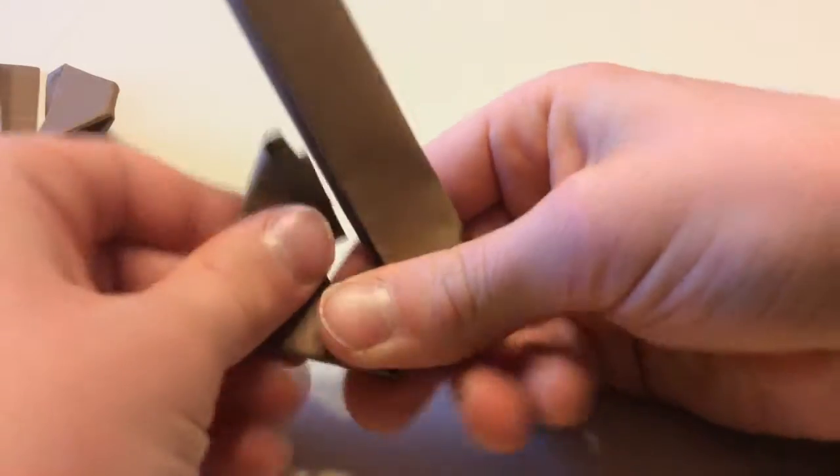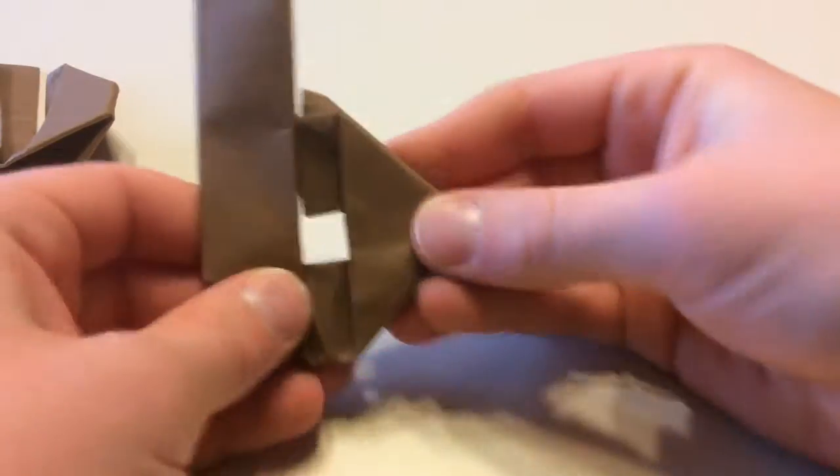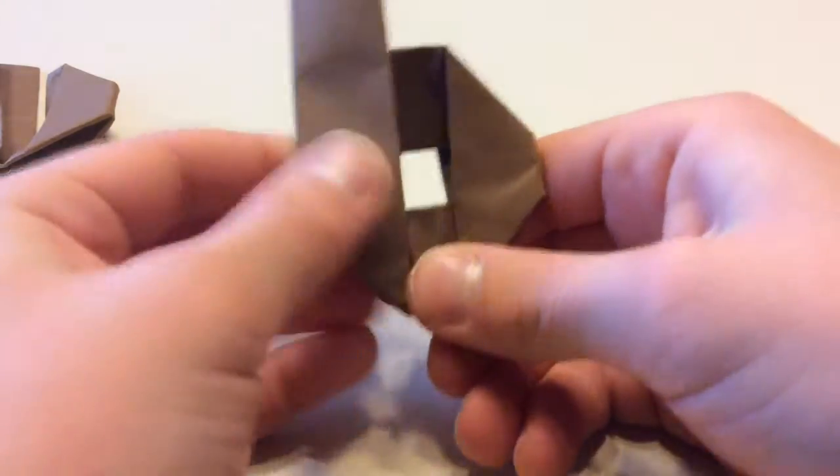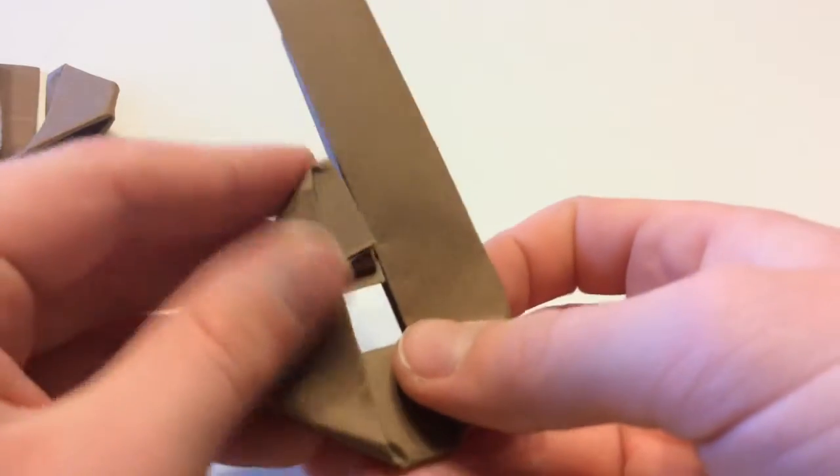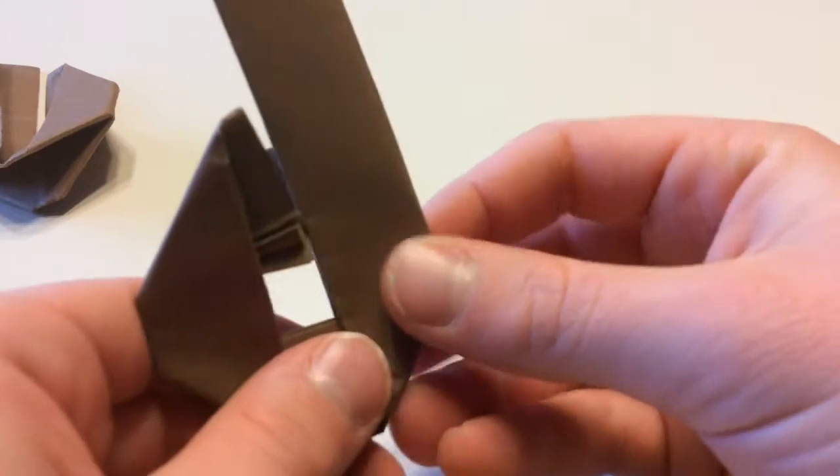And just fold it up and we have our B. So you can just flip it over and it's a D. So that's two models right there in six and a half minutes. So now we're gonna move on to C.